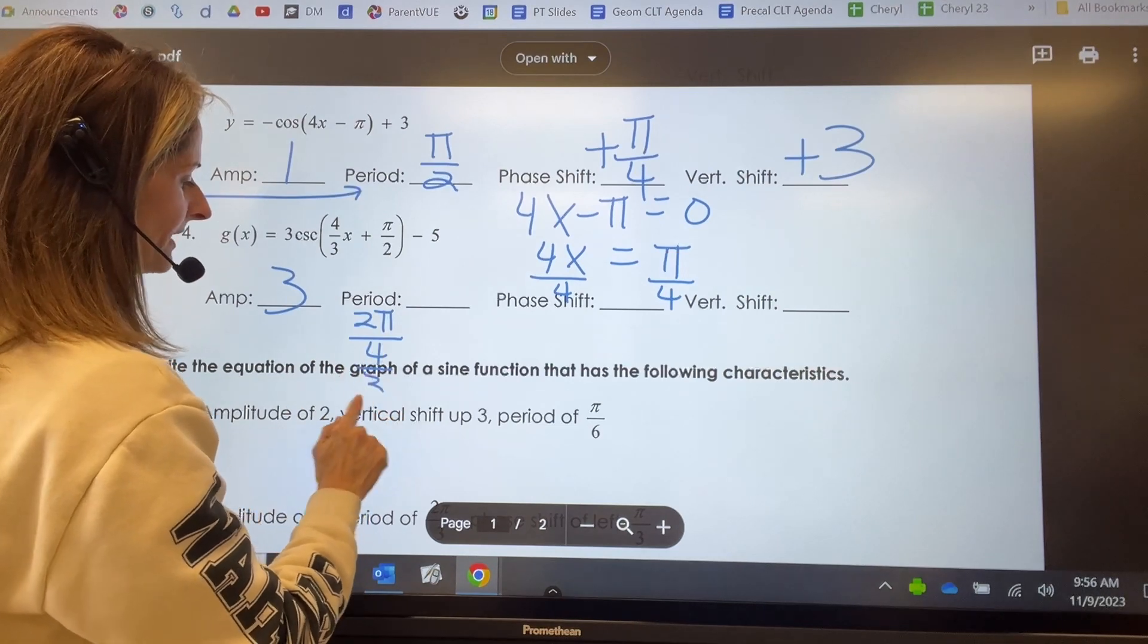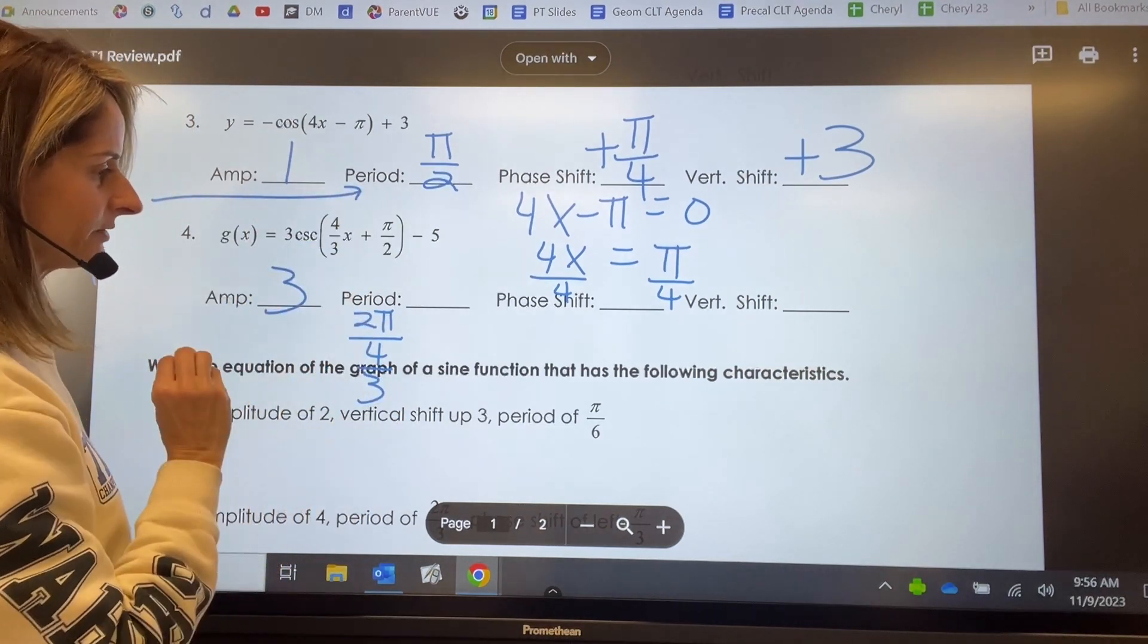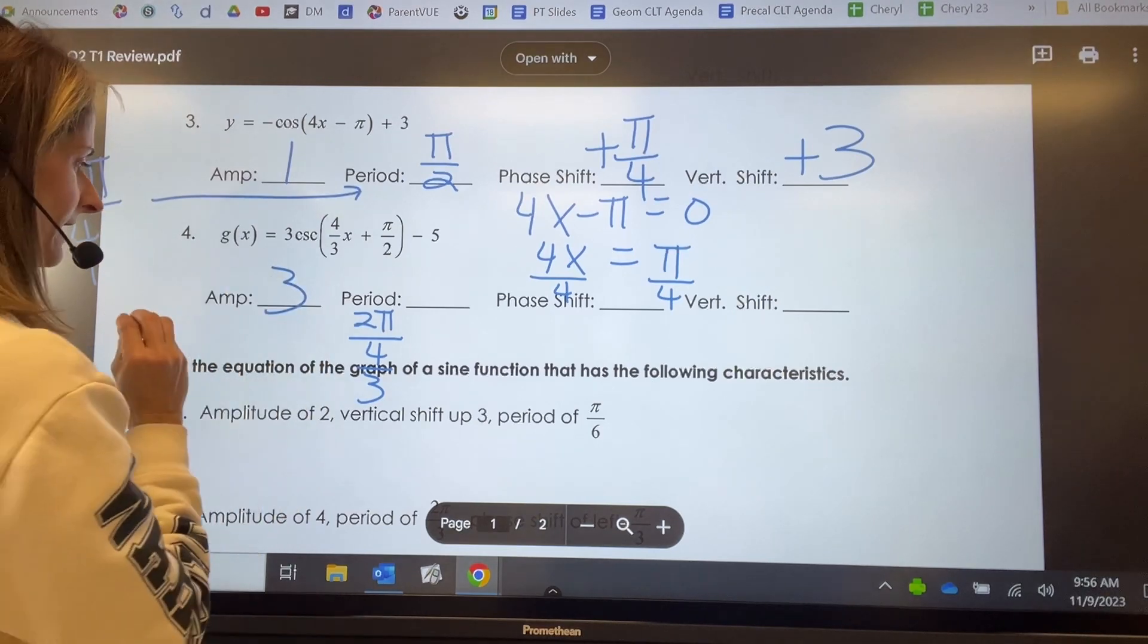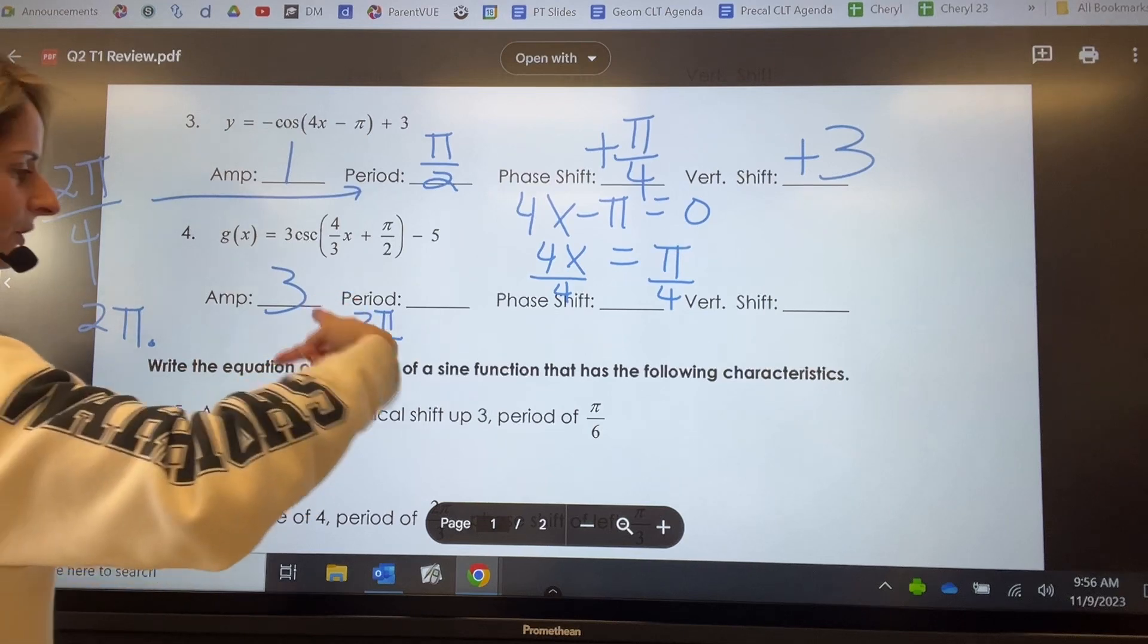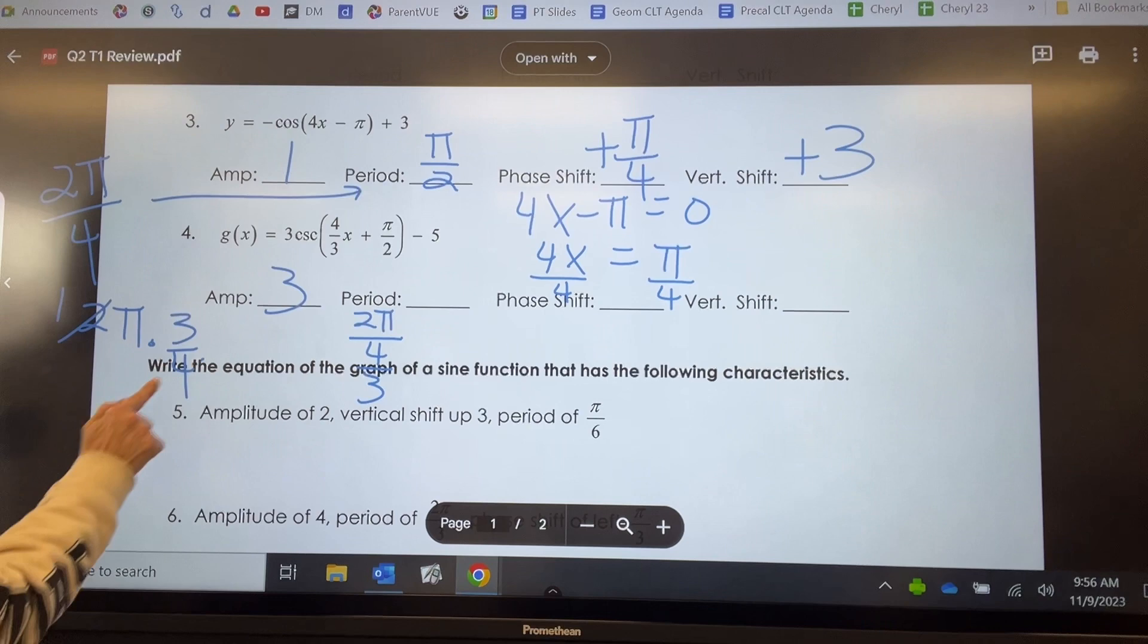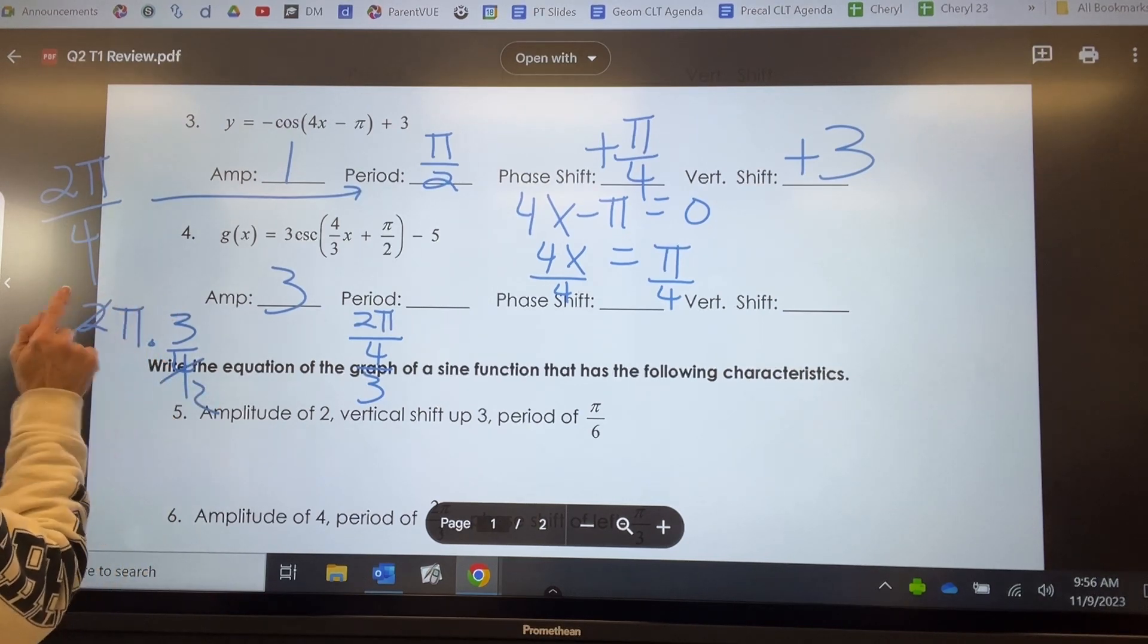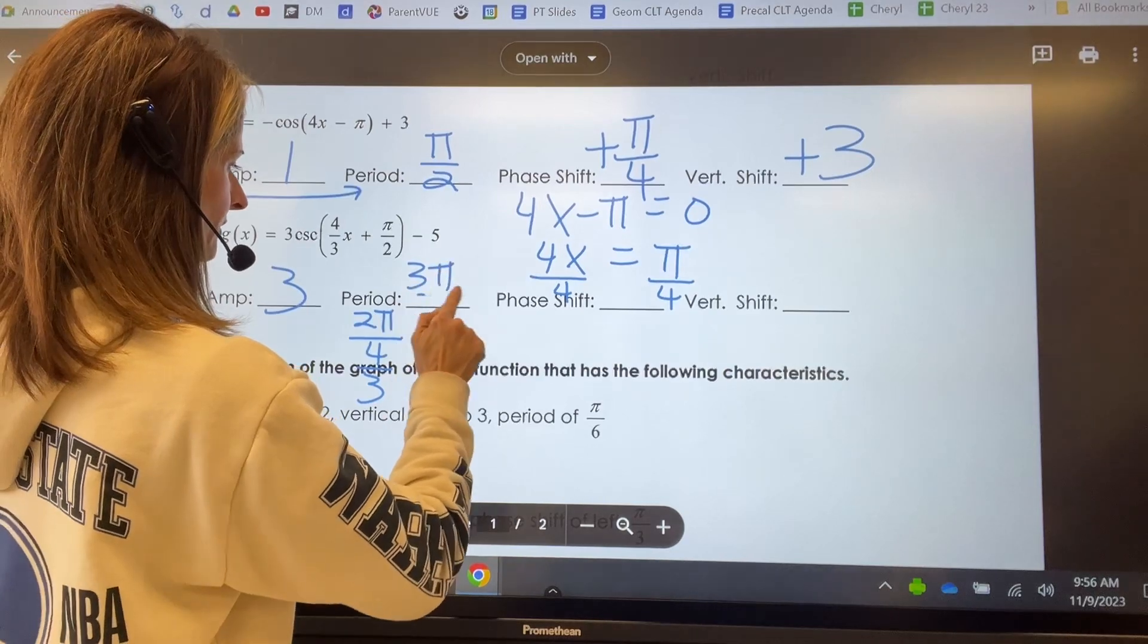We don't ever divide by the reciprocal. We always divide by a fraction. We multiply by the reciprocal. So how do we multiply? Two pi times the reciprocal of four thirds is three fourths. I can tell two goes into two once, two goes into four twice. This is going to be three pi over two.